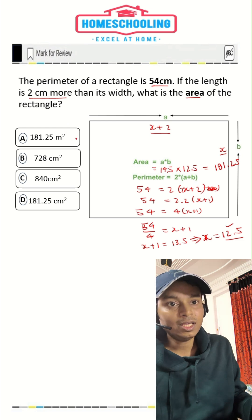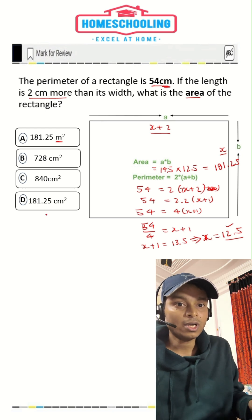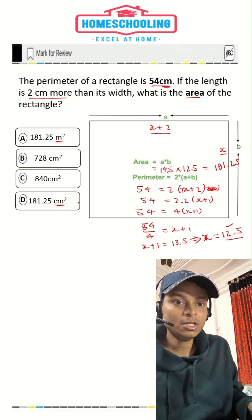Now option A is not your correct answer because the unit is in meter square and here the unit was centimeter. So your answer would be 181.25 centimeter square.